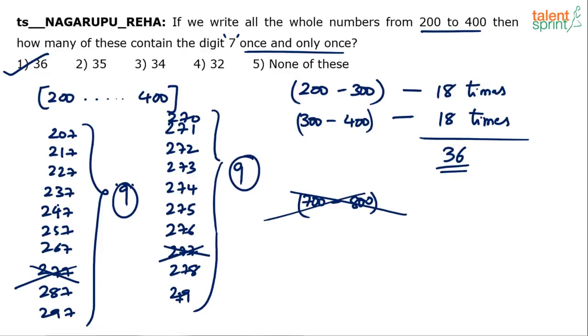The only mistake that I think most of us can commit here is not considering the number 270. All of us will consider 207 to 297, 277, and highly likely that we will skip 277 also because we have to consider 7 only once. We will consider the range of 270 also. But then, I am sure those who all have got 34 as the answer have not considered 270. That should be the number that they have missed. So, they will get 9 plus 8, 17 only. And 17 into 2, they say 34 is the answer. But 34 is not the answer. The answer is 36. Option 1.